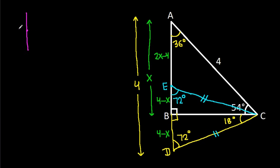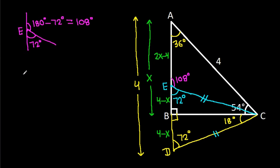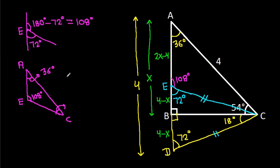At point E, this angle is 72 degrees. So the supplementary angle will be 180 degrees minus 72 degrees, that is 108 degrees. In triangle AEC, this angle is 108 degrees and this angle is 36 degrees. So this angle will be 36 degrees, and the remaining angle will be 54 minus 36, that is 18 degrees.